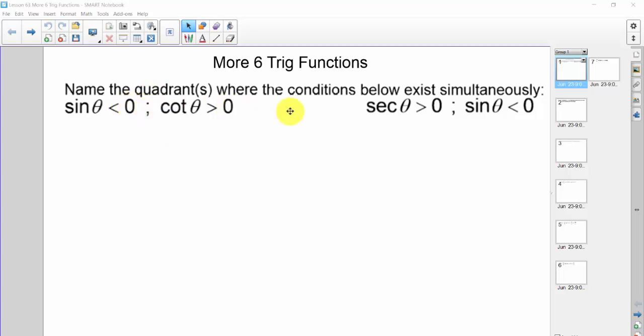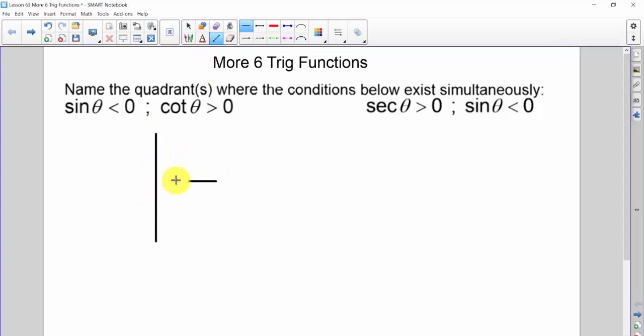We want to name the quadrants where these conditions exist simultaneously or at the same time. These are two separate problems, so I'm looking for where the sine is less than zero and the cotangent is greater than zero. So the way I do this is I draw myself a set of axes, and then I do a little shading. So I say, where is the sine, or in this case the y value,